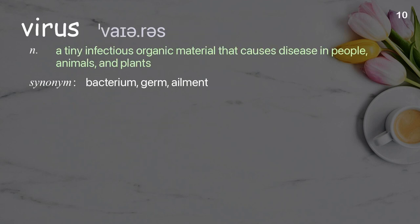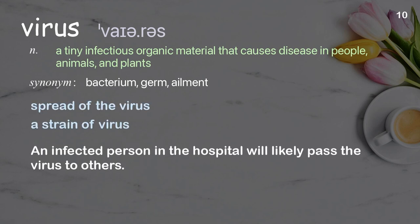Virus: a tiny infectious organic material that causes disease in people, animals, and plants. Examples: spread of the virus, a strain of virus. An infected person in the hospital will likely pass the virus to others.